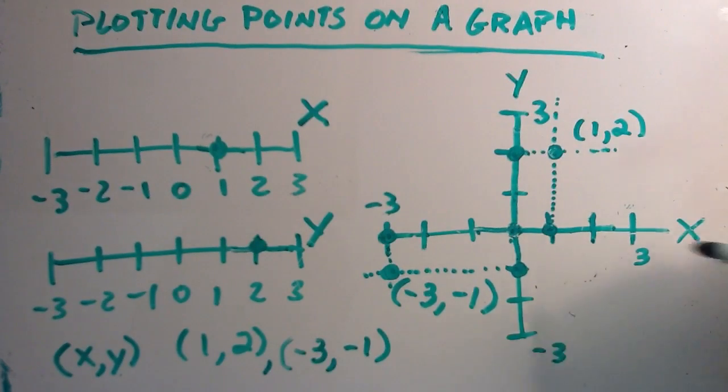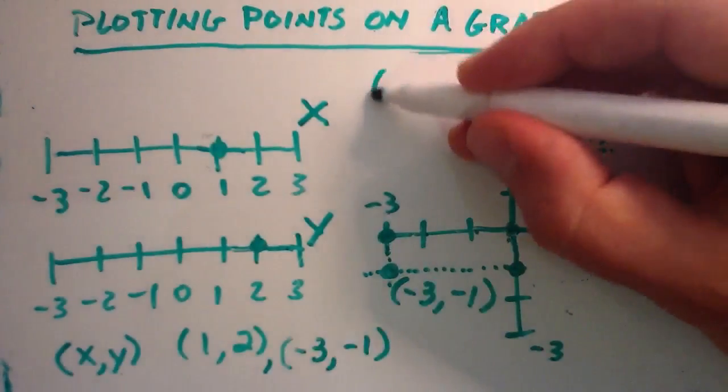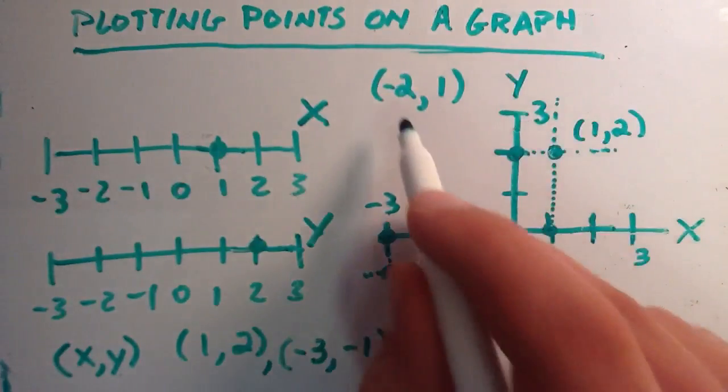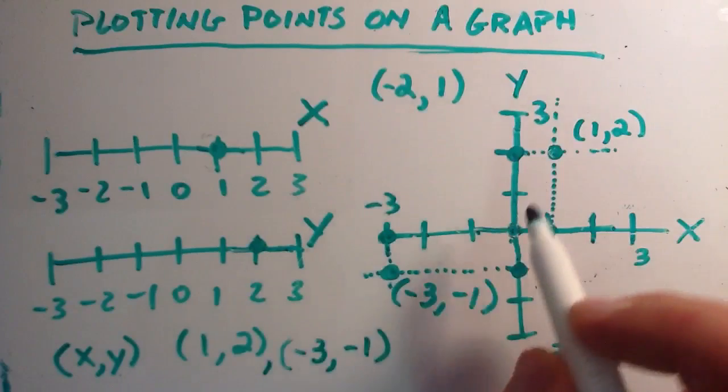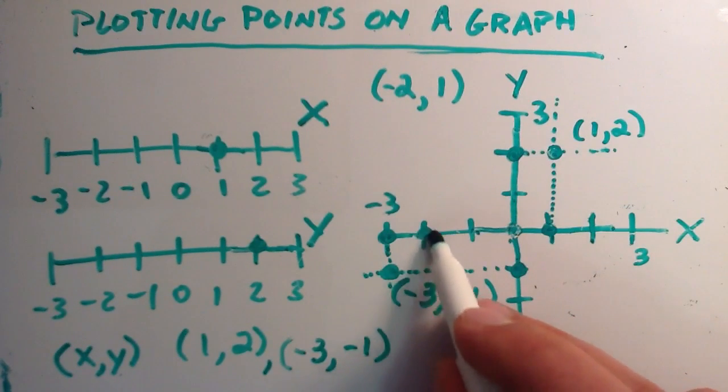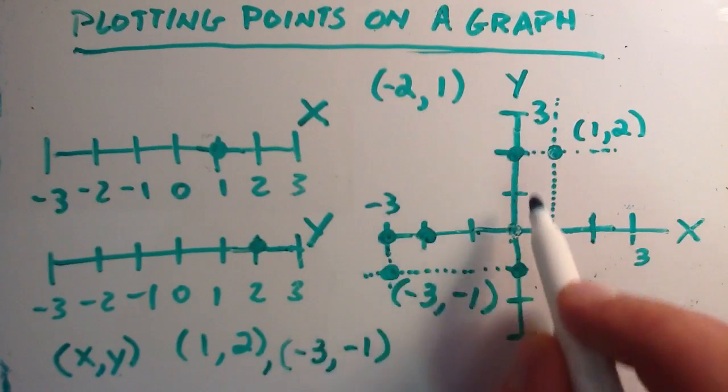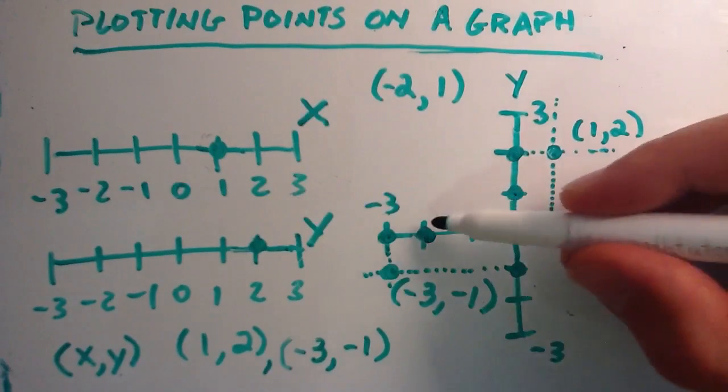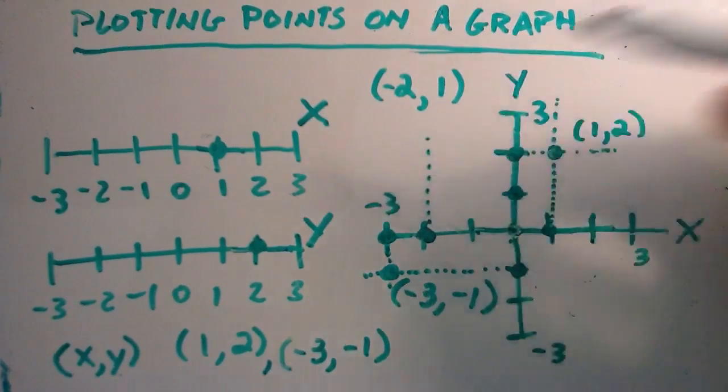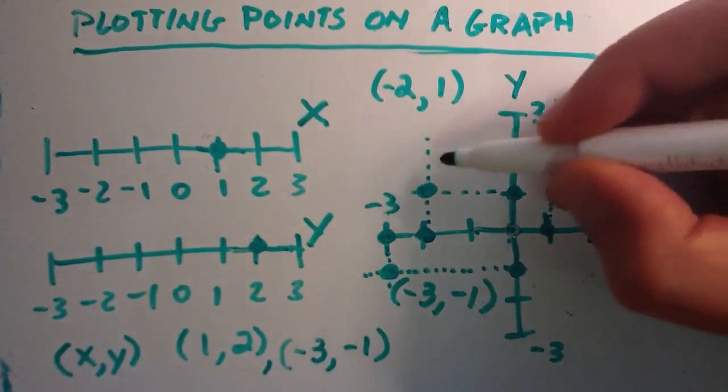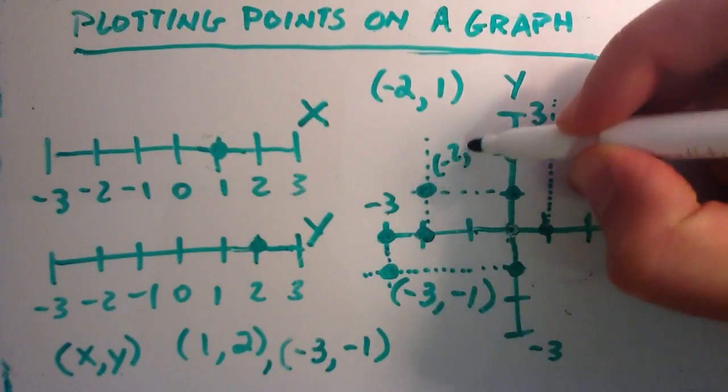So let's go ahead and do one more. Let's say we have (-2, 1). Negative 2, the first number is always the x, so we start here. And we travel minus 1, minus 2 on the x, which is a point here. The second number is y, so going positive 1 unit on the y, we put a point here. We go ahead and draw the projections. And where the projections cross represents the point (-2, 1).